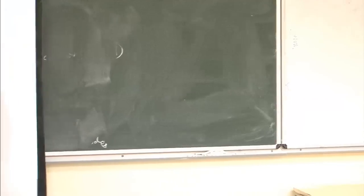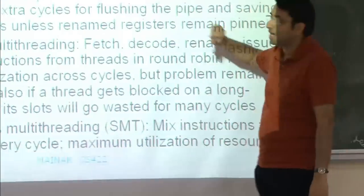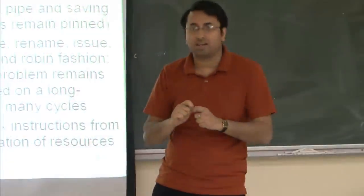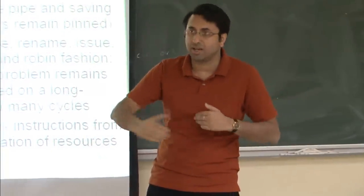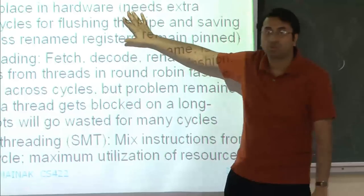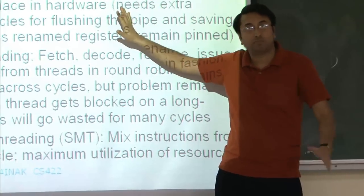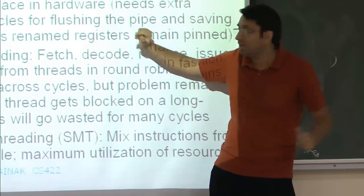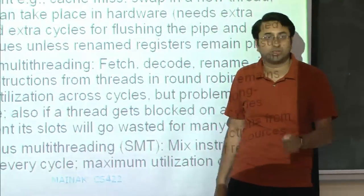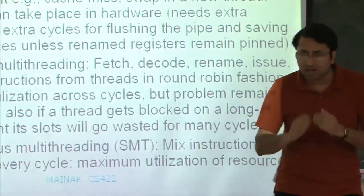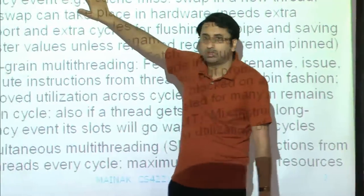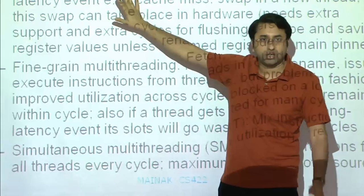Why is it called coarse-grained multi-threading? Because we are not mixing thread instructions at a very fine-grained level — we are letting one thread run at a time. In the operating system, thread switching happens at a coarser granularity: when a system call happens, you switch threads. Here we are going further — even on a cache miss, we switch threads. So it's a finer-grained thread switching compared to the OS, but we are still letting one thread run at a time.